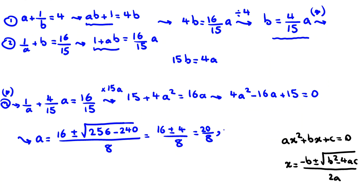256 minus 16 plus minus 4 over 8. It will be 16 plus 4, 20 over 8, or 16 minus 4, 12 over 8. And they will be, if you divide by 4, 5 over 2 and 3 over 2.